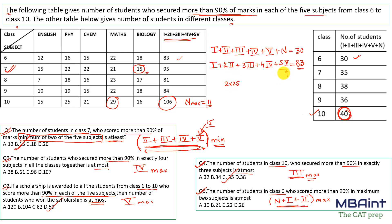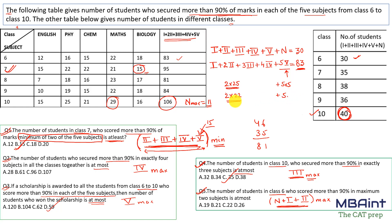Trying exactly 2 = 23 and exactly 5 = 7: contribution is 46 + 35 = 81 — still short. Trying exactly 2 = 22 and exactly 5 = 8: 44 + 40 = 84 — exceeded. Adjusting: exactly 5 = 7, exactly 4 = 1, exactly 2 = 22 gives 35 + 4 + 44 = 83. Equation 1: 22 + 1 + 7 = 30, which is valid. So the maximum value of exactly 2 for class 6 in this context is 22.